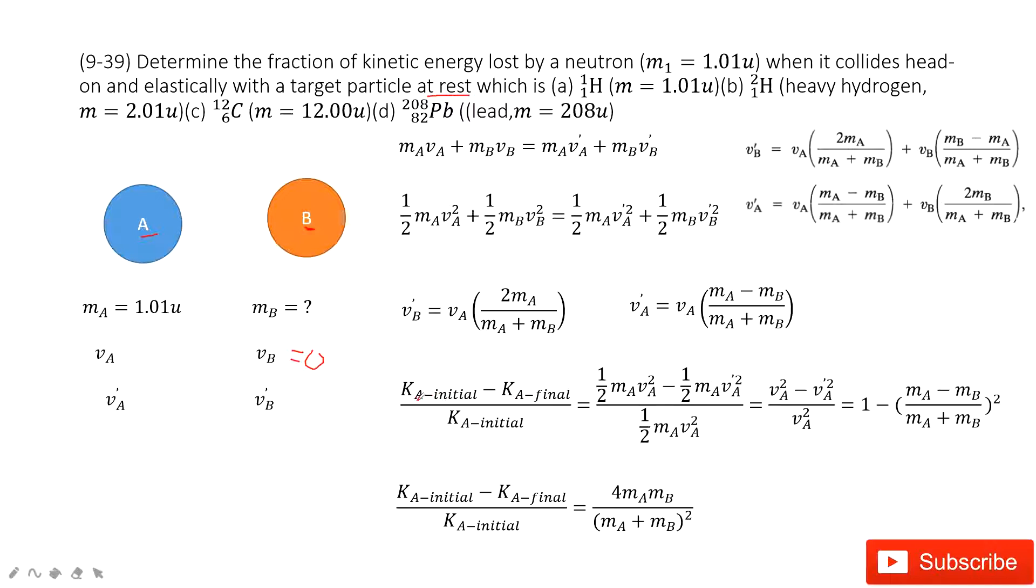So that means this one is the kinetic energy lost: use the initial kinetic energy for A minus the final energy for A divided by the initial energy for A, right?